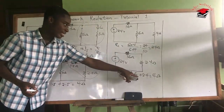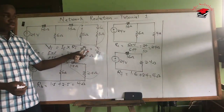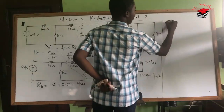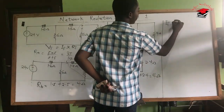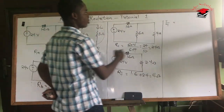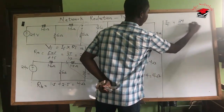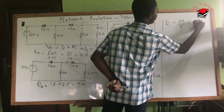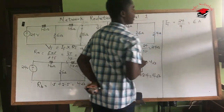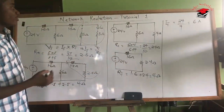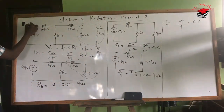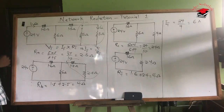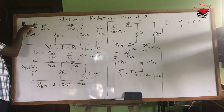In this simplified circuit we can calculate the total resistance: 1.6 in series with 2.4, so RT = 1.6 + 2.4 = 4 ohms. We then use this to calculate the total current: IT = VT / RT = 24 / 4 = 6 amps. So the current produced by the source is 6 amps.